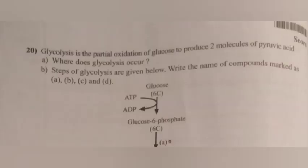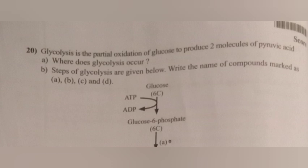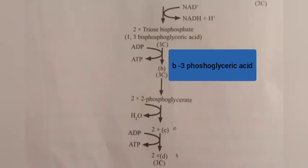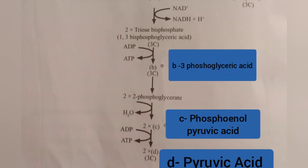Question 20. Glycolysis is the partial oxidation of glucose to produce two molecules of pyruvic acid. A. Where does glycolysis occur? Answer: Cytoplasm. B. Steps of glycolysis are given below. Write the name of compounds marked as A, B, C and D. Answer: A — Fructose 6-phosphate; B — 3-phosphoglyceric acid; C — Phosphoenolpyruvic acid; D — Pyruvic acid.